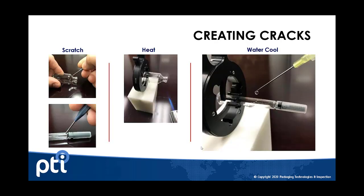Creating cracks is another great way to produce positive controls that reflect real-world defects. Use safety precautions since it involves heat and cracking the glass. The process starts by scratching the glass surface where you want to create a crack, then heating that surface for about 3 to 5 seconds, and then applying a droplet of water. That droplet creates a thermal shock and produces the crack.